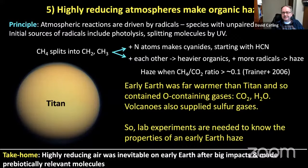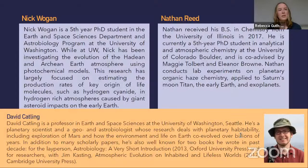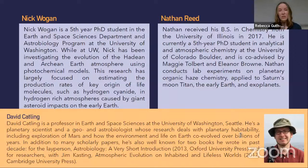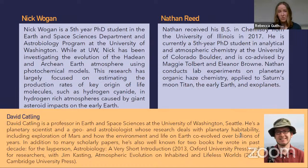Nick Wogan is a fifth-year PhD student in the Earth and Space Sciences Department and Astrobiology program at the University of Washington, where he has been investigating the evolution of the Hadean and Archean Earth atmosphere using photochemical models. His research has largely focused on estimating the production rates of key origin-of-life molecules, such as hydrogen cyanide, in hydrogen-rich atmospheres caused by giant asteroid impacts on early Earth.